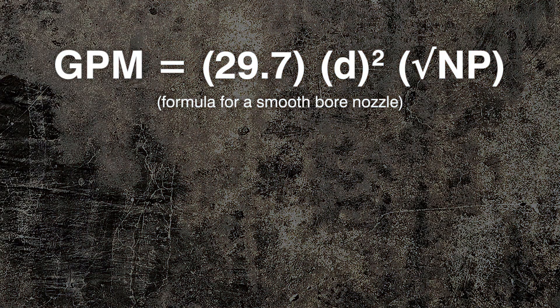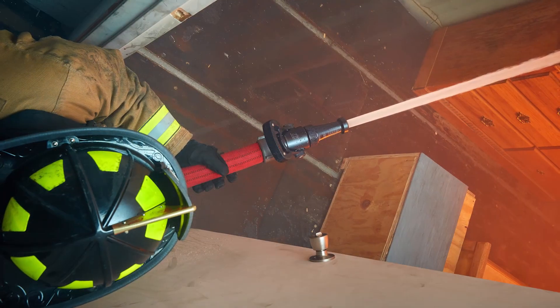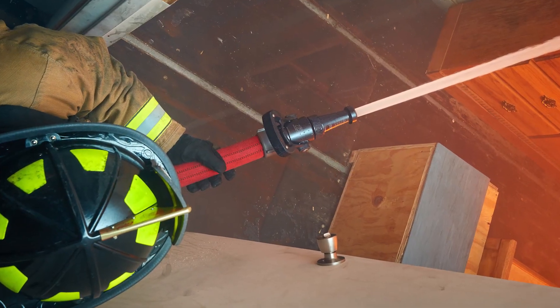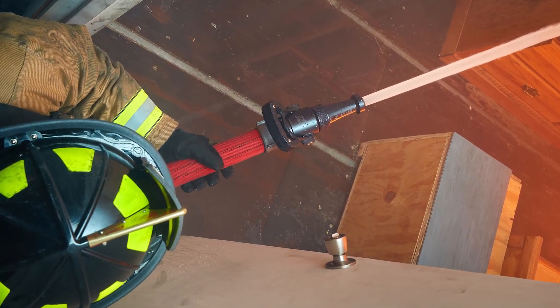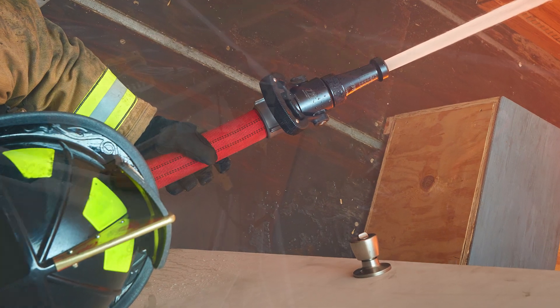Our fire textbooks tell us that flow, or GPM, is related to pressure. Using the smoothbore formula shown here, you can calculate either GPM or nozzle pressure if you know a few basic facts. Let's compare the textbook to the fire ground and see if the theoretical matches the real world.